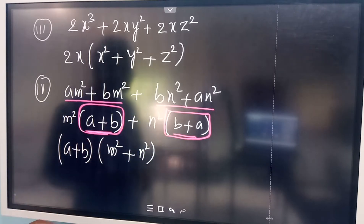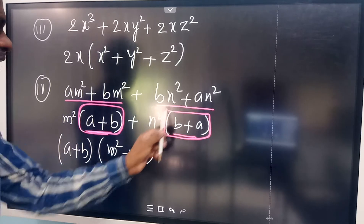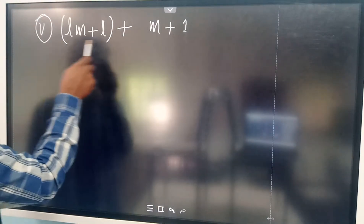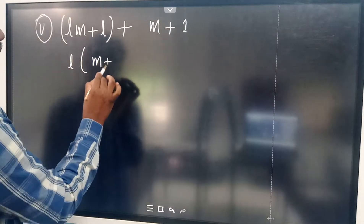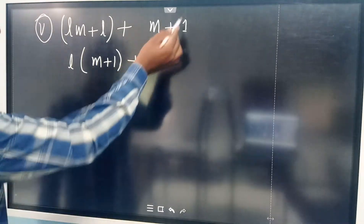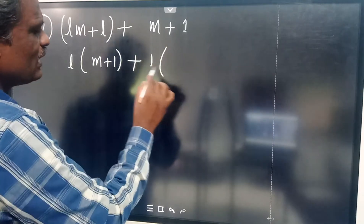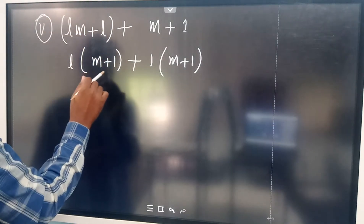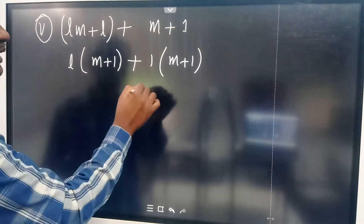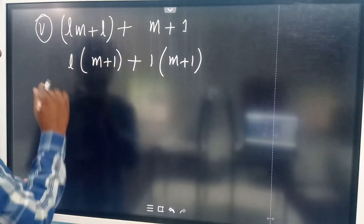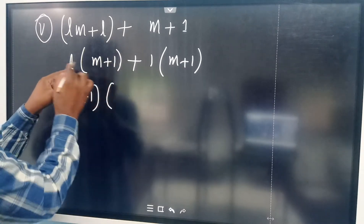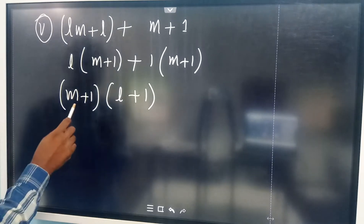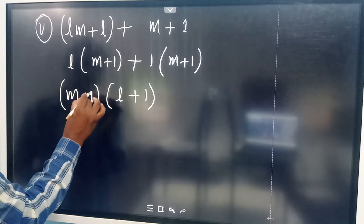Don't confuse yourself while solving this. Once we take A plus B common, M squared will remain in the first place, and M squared will remain in the second place. From the first two terms you can take L common, and what remains is M plus 1. For the remaining terms, if there is nothing common, you take 1 as common, and M plus 1 will remain. So M plus 1 is common in both places. Take that out: M plus 1 into L plus 1. Remember, don't confuse L with 1.